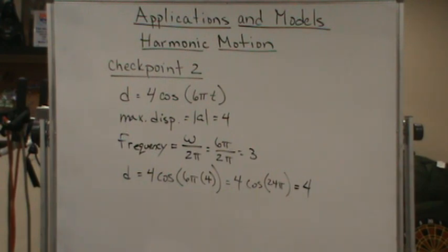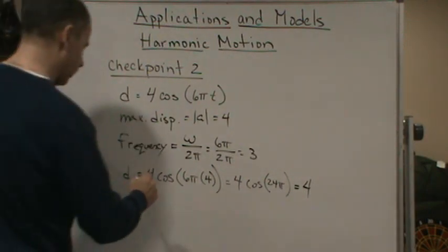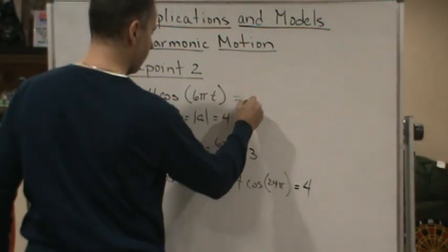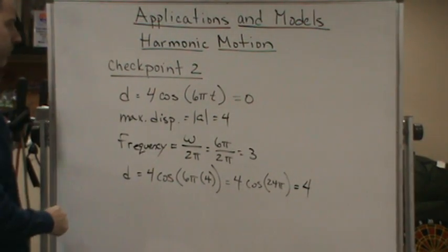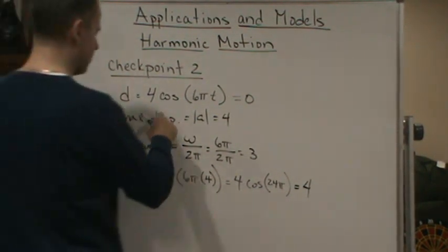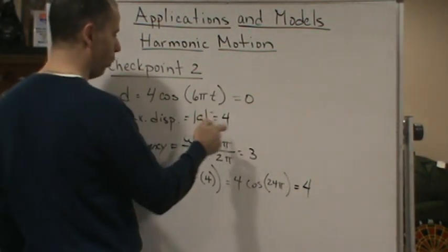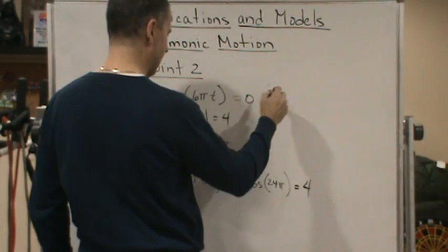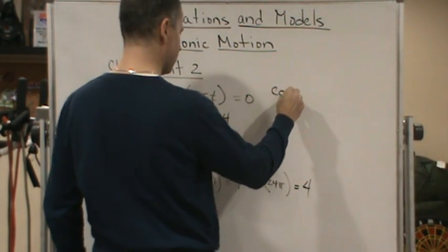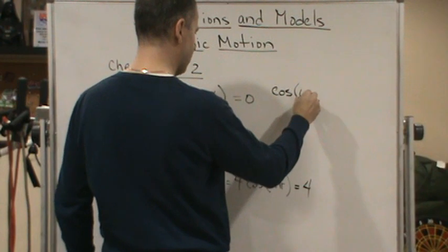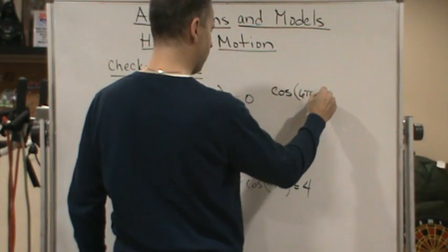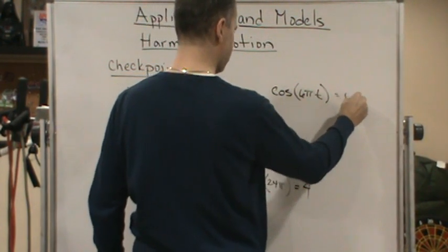Now, the last one is what's the least positive value of T for which D is 0? So again, we're going to set this equal to 0. So obviously, we can divide both sides by 4. So this would be the same thing as just solving cosine of 6 pi times T equals 0.